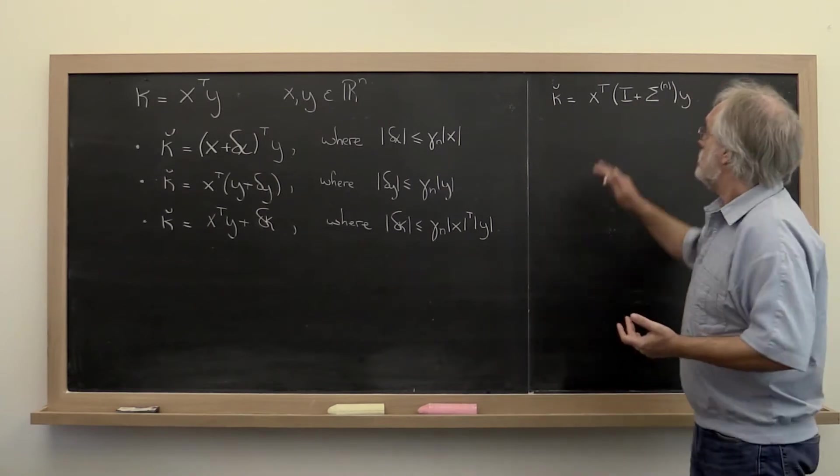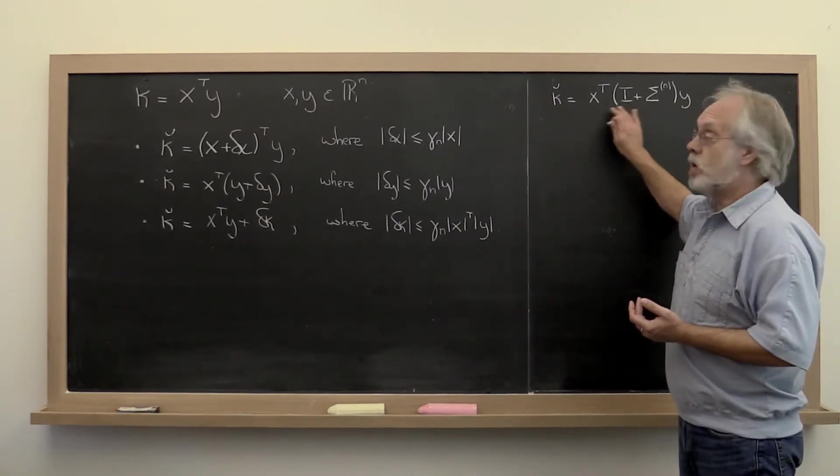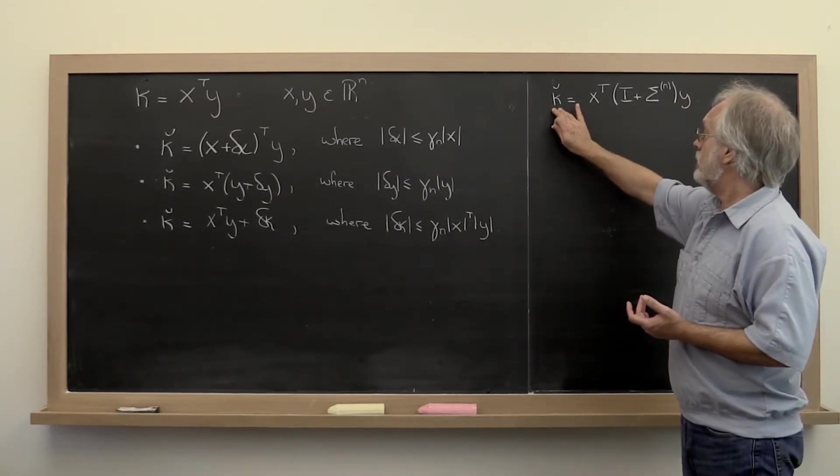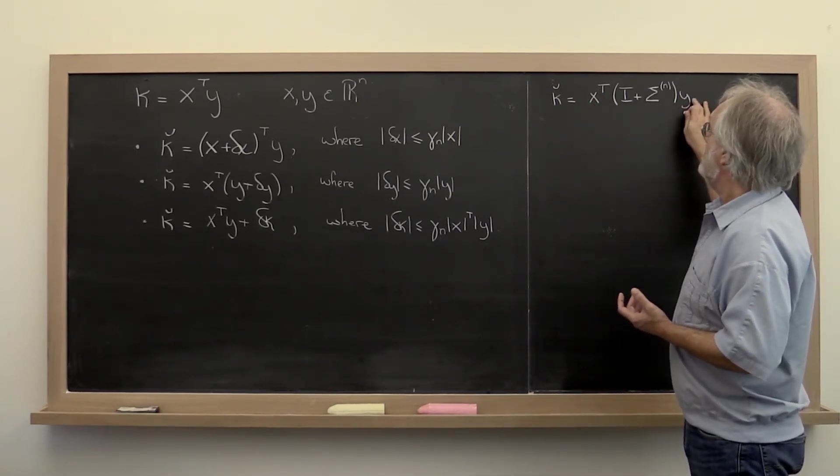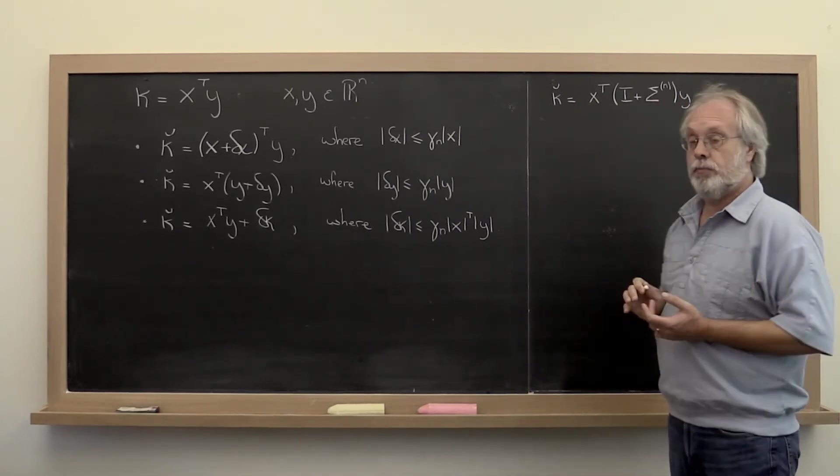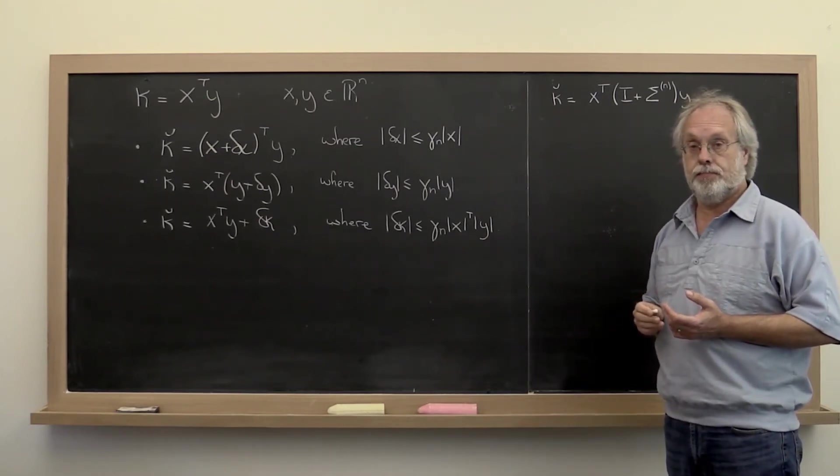Our analysis brought us to this point right here, where the computed kappa is equal to the dot product between x and y, except with this diagonal matrix thrown into the middle.